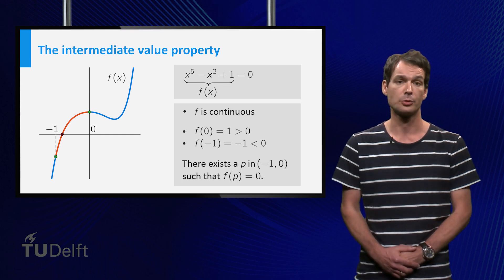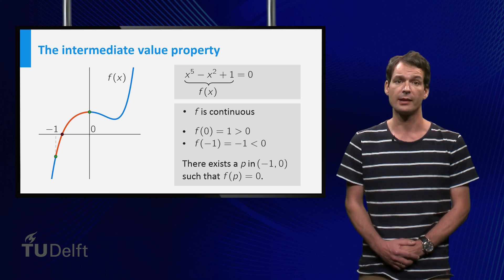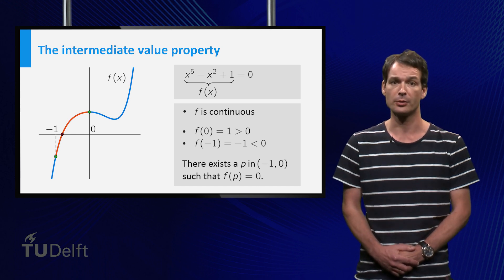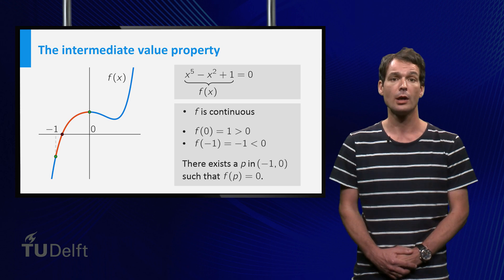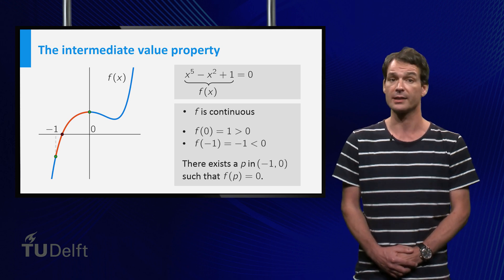This is because the function x to the power 5 minus x squared plus 1 is continuous, and it attains positive and negative values on the interval, so it must also be 0 at some point. You can clearly see this from the graph.